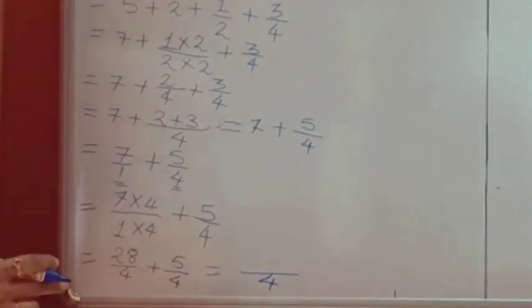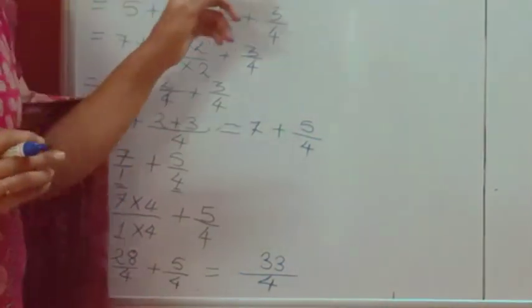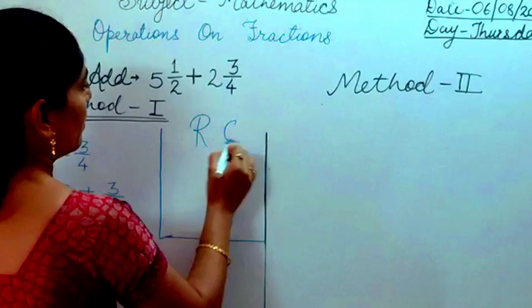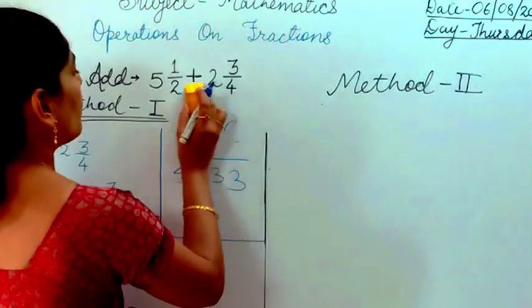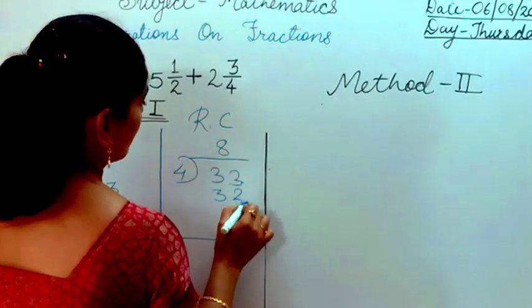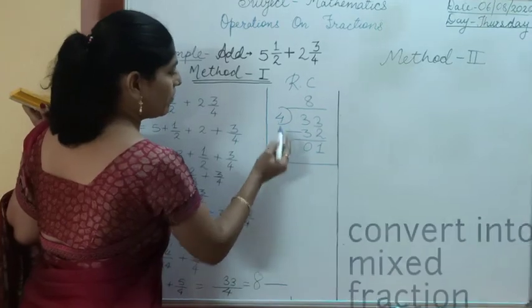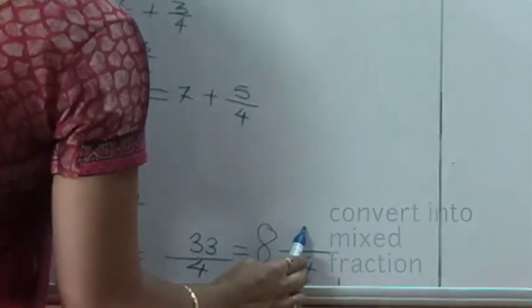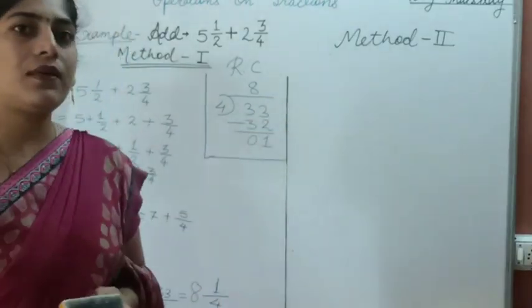The denominator stays as 4, and 28 plus 5 equals 33 upon 4. Since our question is in mixed form, we convert this improper fraction. In the rough column, we divide 33 by 4. 4 eights are 32, and 33 minus 32 equals 1. Denominator stays as it is, quotient is the whole number, remainder is the numerator. The answer is 8¹/₄.